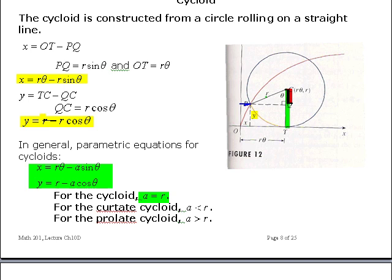So the distance from the center out to the pencil is greater than r for the prolate, less than r for the curtate, but equal to r for the cycloid. We're only going to be concerned with the cycloid here, but I want to show you what the equations look like in general.